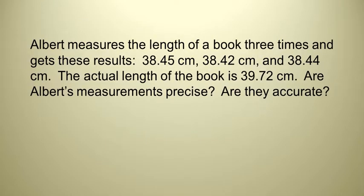Let's try a few examples and see how these might appear on a test or quiz. Here we have Albert, who measures the length of a book three times and gets these results. And we have three values in centimeters. The actual length of the book is 39.72 centimeters. Are Albert's results precise and are they accurate? Well, if they're precise, we want to look at his results and just see if they're close to each other.